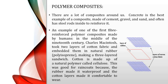The very first fiber reinforced polymer composite made by human beings was in the 19th century, made by Charles McIntosh. He took two layers of woven cotton fabrics and embedded them in a natural rubber matrix — polyisoprene. The cotton, made of cellulose, provides comfort, and the rubber provides waterproof nature. This composite material was used for making raincoats.